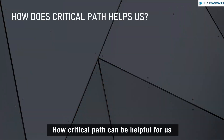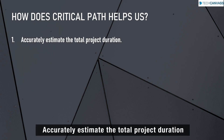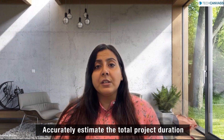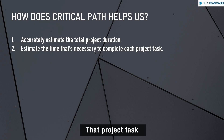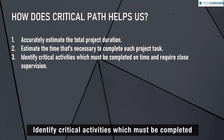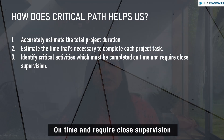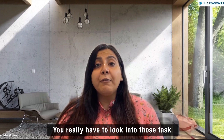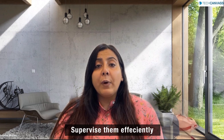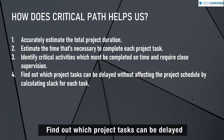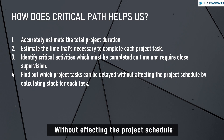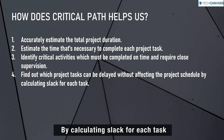Let's see how critical path is going to be helpful for us. First, it is going to accurately estimate the total project duration. Second, it is going to estimate the time necessary to complete each project task. Third, it is going to identify the critical activities which must be completed on time and require close supervision, meaning you really have to look into those tasks closely. Fourth, it is going to find out which project tasks can be delayed without affecting the project schedule by calculating the time for each and every task.